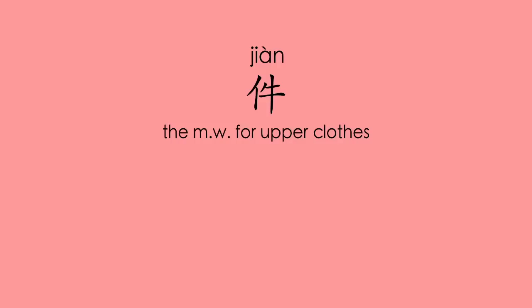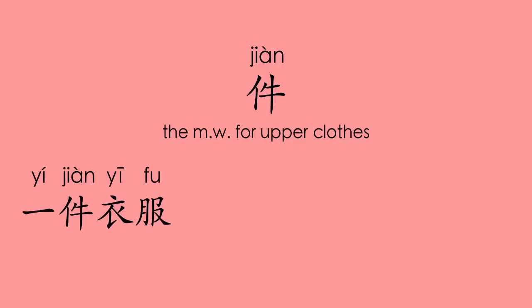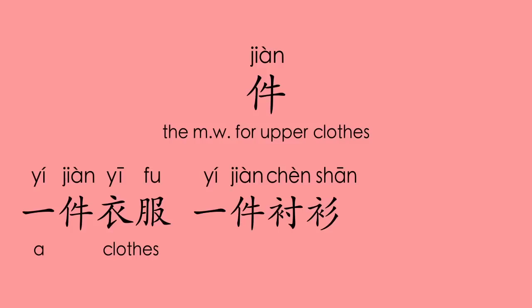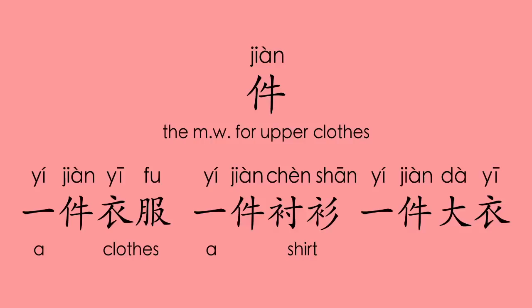件 — the measure word for upper clothes. 一件衣服 (a piece of clothes), 一件衬衫 (a shirt), 一件大衣 (a coat).